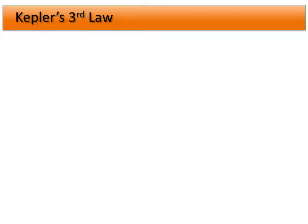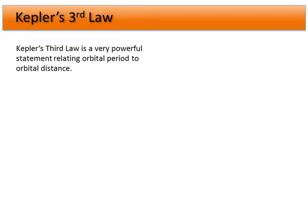We're going to take a closer look at Kepler's third law — a powerful statement relating the orbital period to the orbital distance: the square of the orbital period is proportional to the cube of the orbital distance.